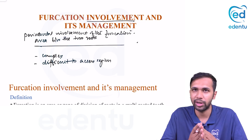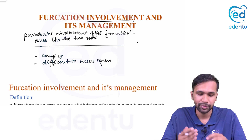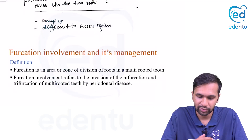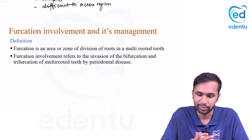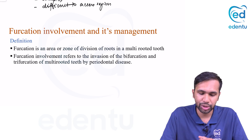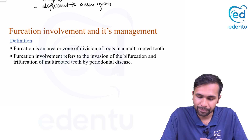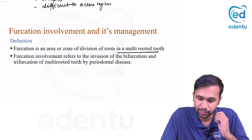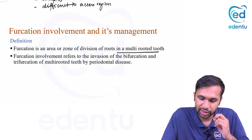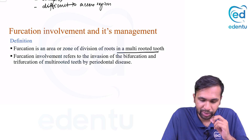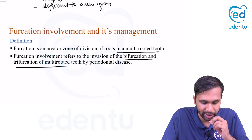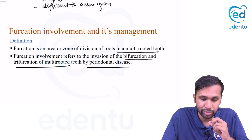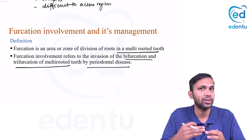Starting with definitions: furcation is the area or zone of division of roots in multi-rooted teeth. Furcation involvement refers to the invasion of bifurcation and trifurcation of multi-rooted teeth by periodontal disease.